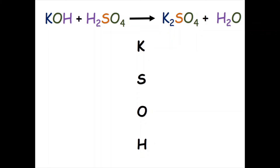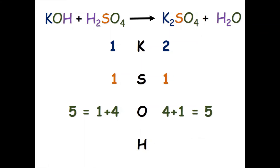Now we count how many atoms we have on each side. For potassium: one on the left, two on the right. For sulfur: one on each side. For oxygen: one from potassium hydroxide and four from sulfuric acid, making five on the left; and four from K₂SO₄ plus one from water on the right. For hydrogen: one from potassium hydroxide and two from sulfuric acid — three in total on the left; two from water on the right.